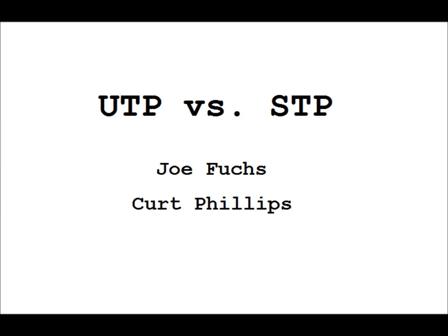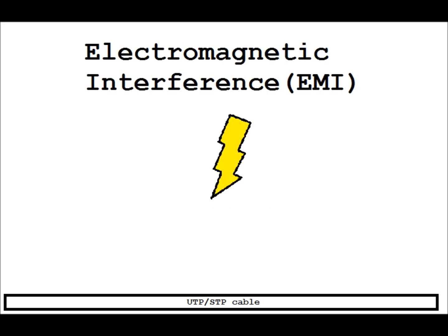Hi, my name is Joe Fuchs and my name is Kurt Phillips. Today we are going to be discussing the main differences between unshielded twisted pair, also known as UTP, and shielded twisted pair, also known as STP. We will then get into advantages and disadvantages for both cables and when to use them.